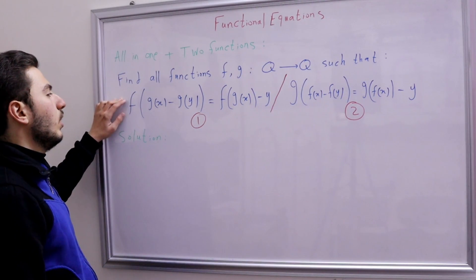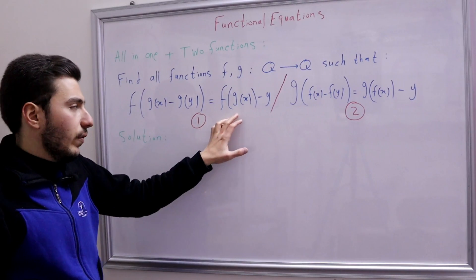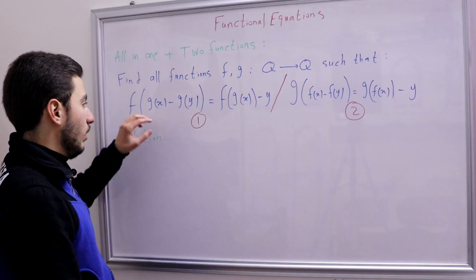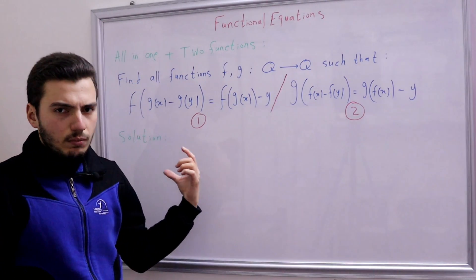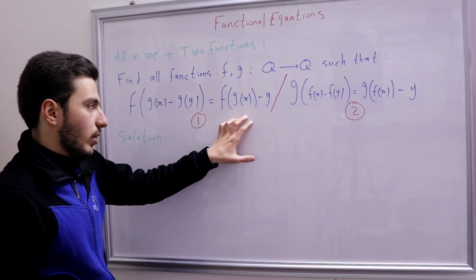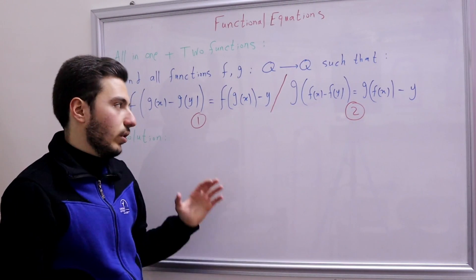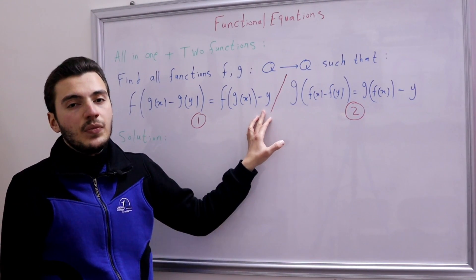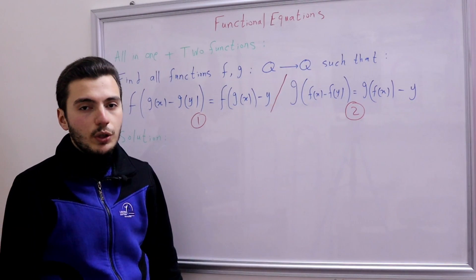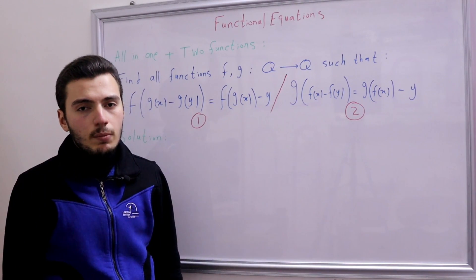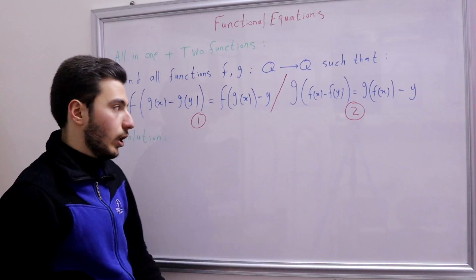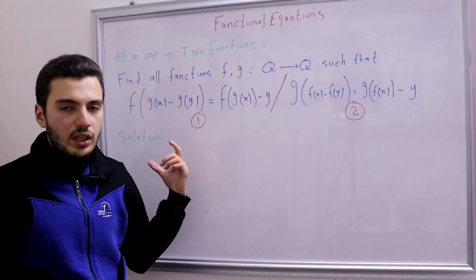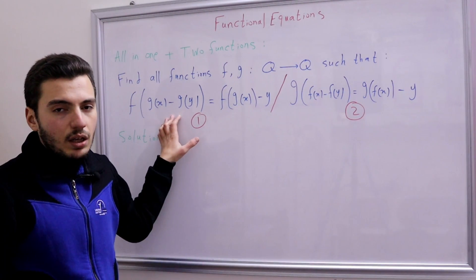Looking at the shape of the equation: on the left-hand side we have f(g(x) − g(y)), which is really ugly. On the right-hand side we have f(g(x)) minus y, which is less ugly but still not easy to handle. So what is the most suitable substitution to start with? You might say we'll start with substituting, but we have this ugly expression f(g(x) − g(y)) to deal with.